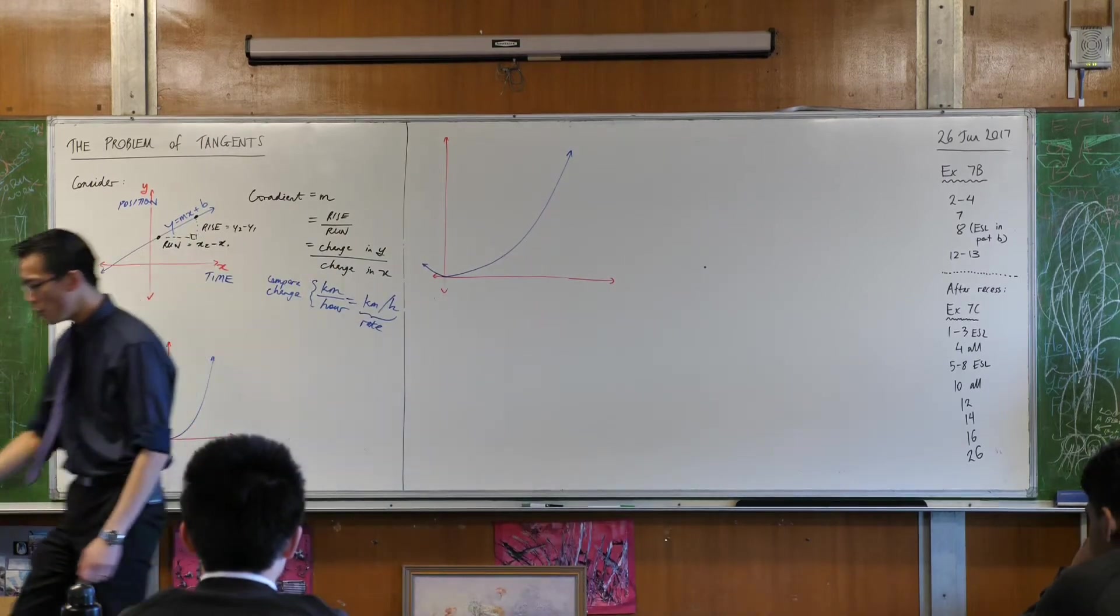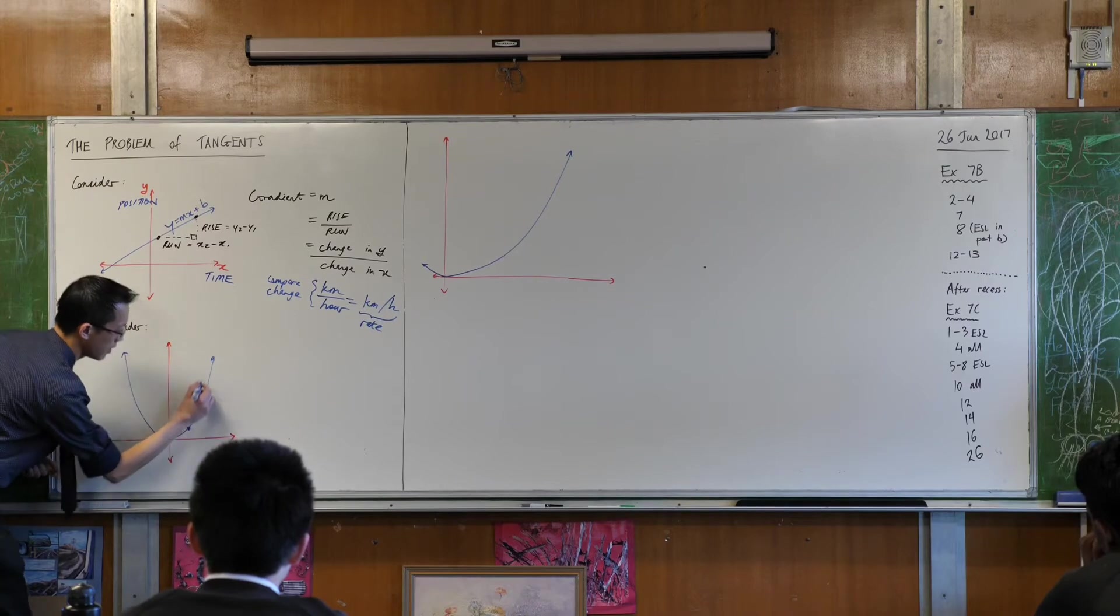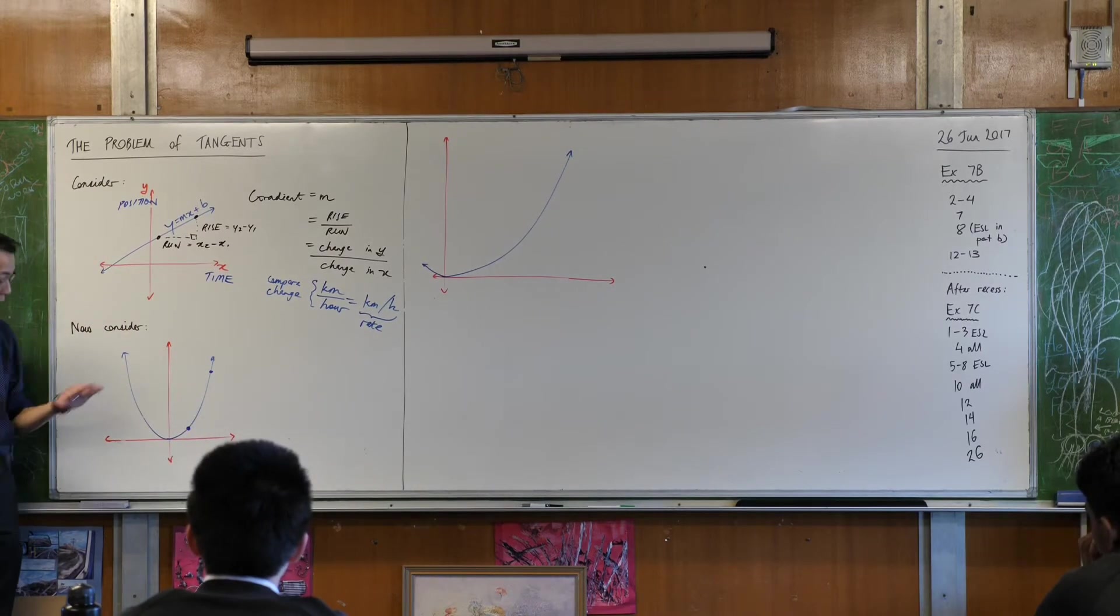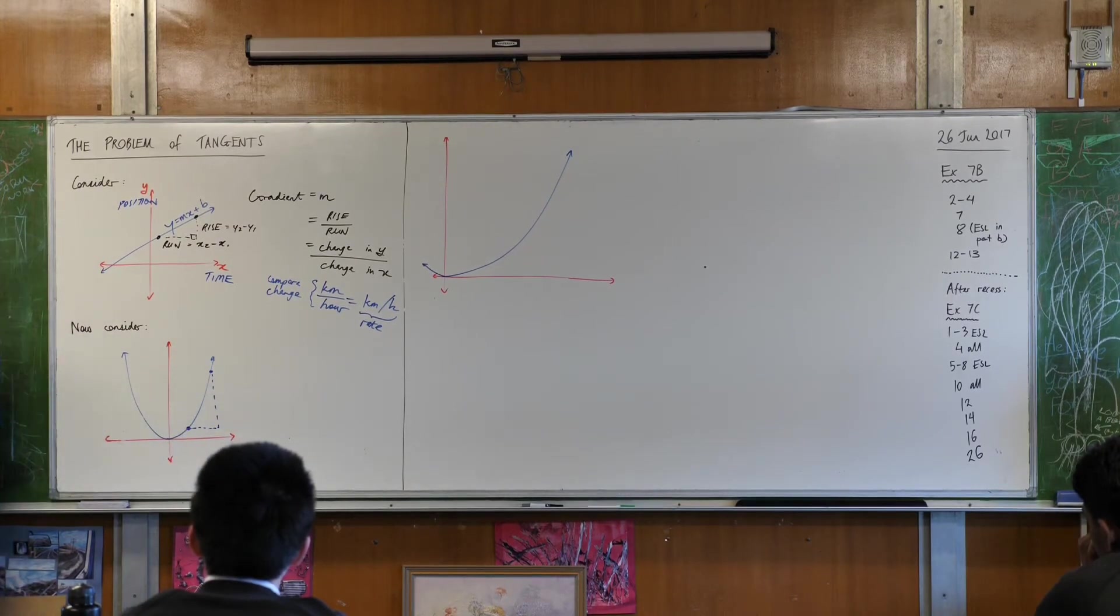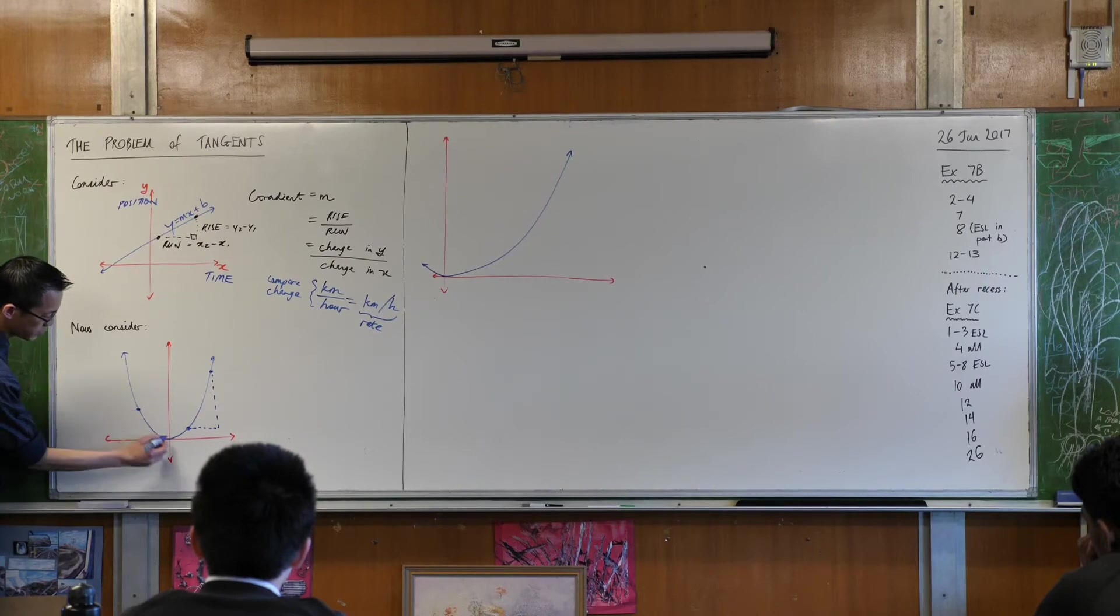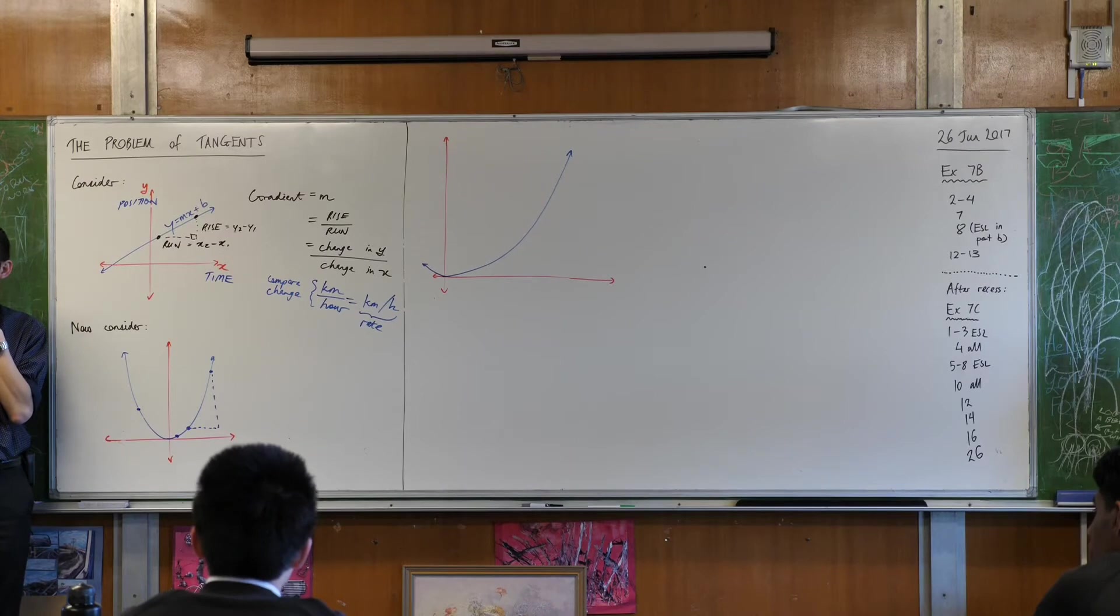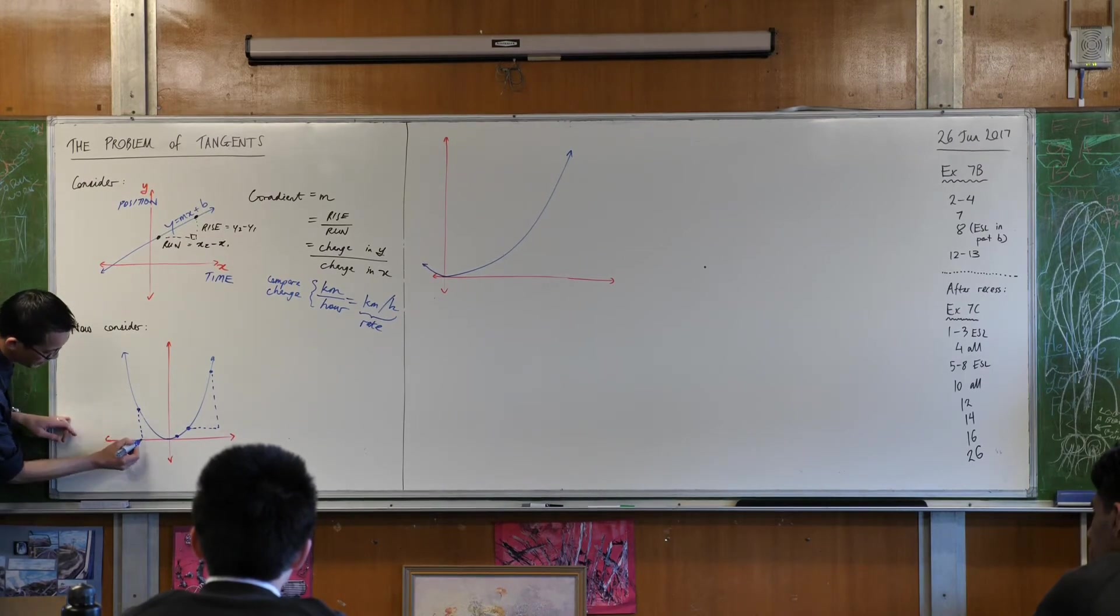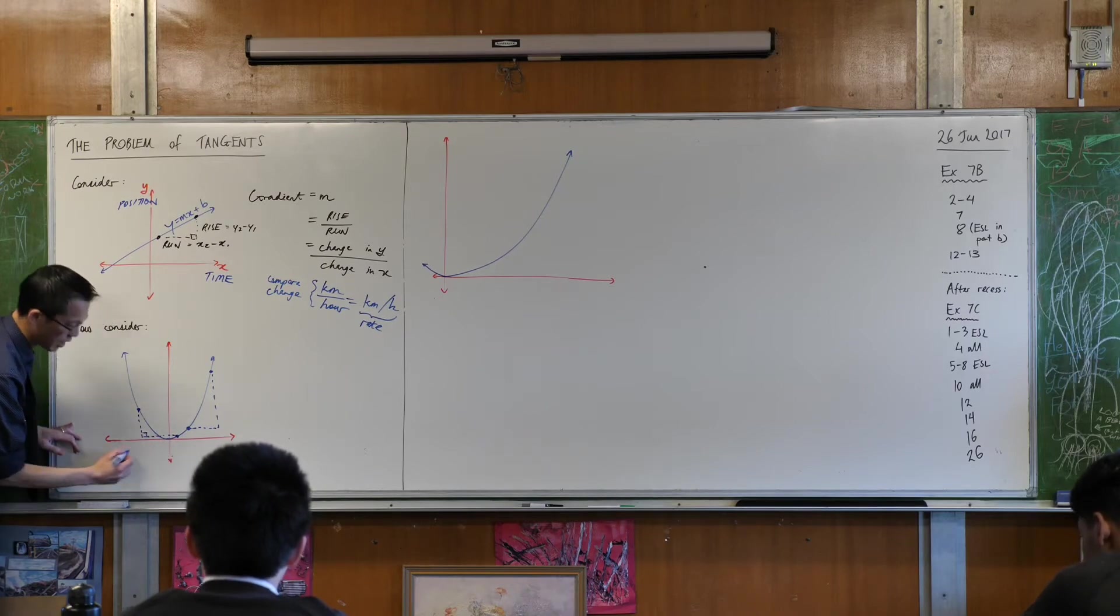But this guy is different. If you pick two points, like say here and here, I could find out the gradient between these two points, couldn't I? I could do the same rise over run thing that I did before. But of course, if I pick a different pair of points, excuse me, if I pick a different pair of points like say this one and this one, you get a whole different gradient, don't you? For example, in this case, your rise is going to be negative. And your run is going to be a completely unrelated number.